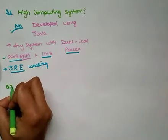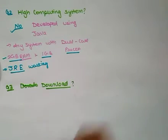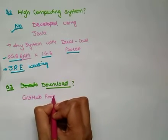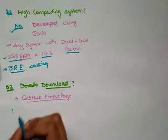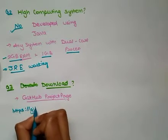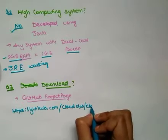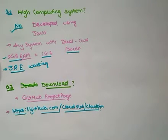The next question is: how to download CloudSim? We can get the source code of CloudSim through the GitHub project page. Go to https://github.com/cloudslab/cloudsim and you will be directed to that page, where you can download CloudSim. By default, the project page displays the source code of the current release.